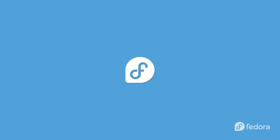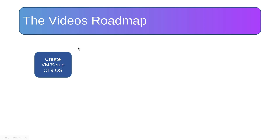With all that being said, let's jump right in. The video roadmap: we will start with the first part, which is creating a VM and setting up Oracle Linux 9. Once we have this VM ready, we will clone it to have three nodes. This part will have a step-by-step guide to create a virtual machine using VirtualBox, install Oracle Linux 9, and cover basic system configuration like networking and firewall configuration.